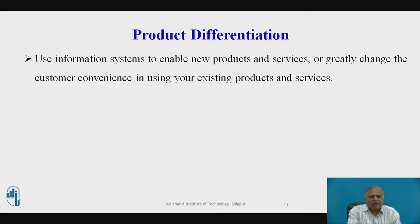Manufacturers and retailers are using information systems to create products and services that are customized and personalized to fit the precise needs of individual customers. For example, customers can select the type of shoes, colors, materials, outsoles, and even a logo of up to 8 characters. Nike transmits the orders via computers to specially equipped plants in China and Korea, and the sneakers take about 3 weeks to reach the customer. This ability to offer individually tailored products using the same production resources as mass production is called mass customization.